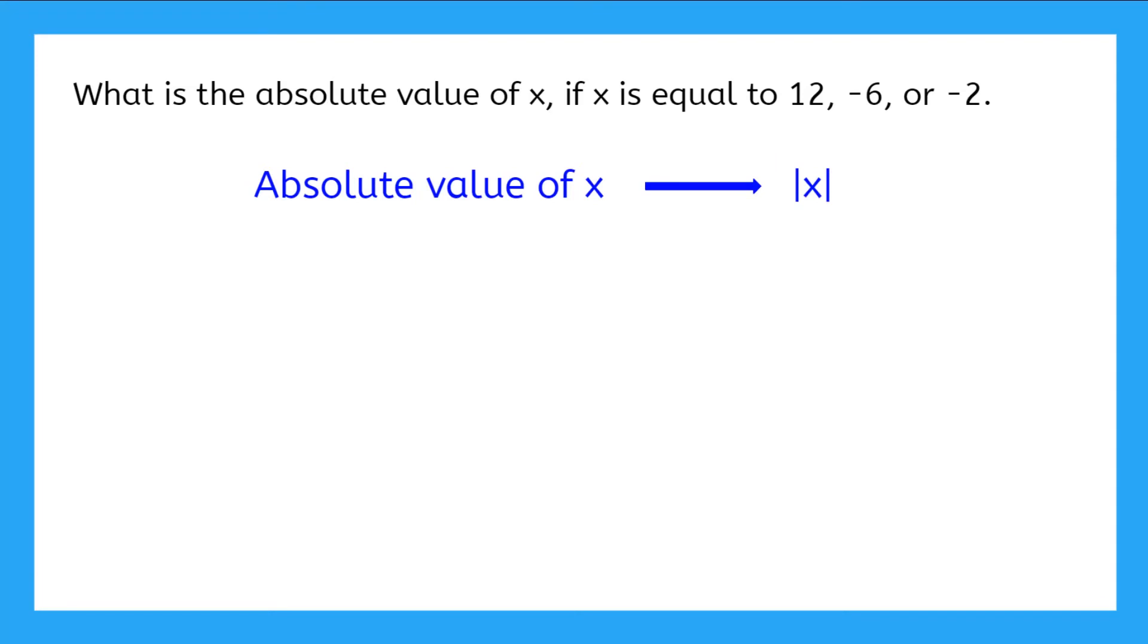So here we're finding the absolute value when x is equal to 12. If I'm trying to find the absolute value of x when x is equal to 12, I'm finding the absolute value of 12. Now remember, absolute value is the distance from zero. So how far from zero is 12? That's right, 12 spaces. So the absolute value of 12 is 12. Let's do another one.